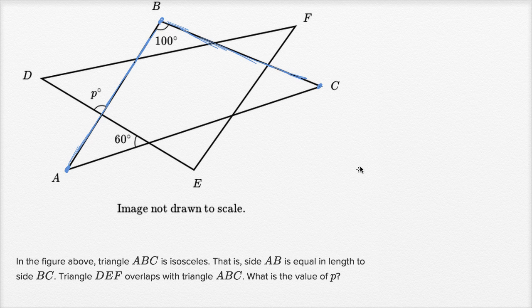So ABC is an isosceles triangle, and I'm gonna draw it separately here. This is an isosceles triangle. In an isosceles triangle, if these two sides are congruent, then these base angles are going to be congruent.